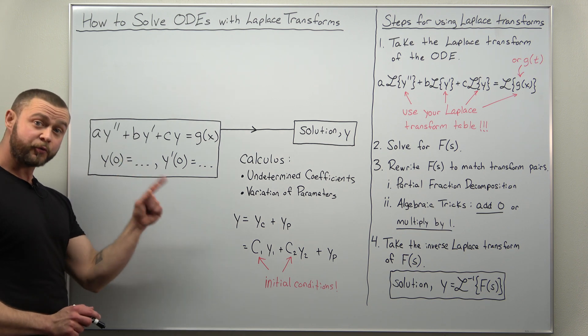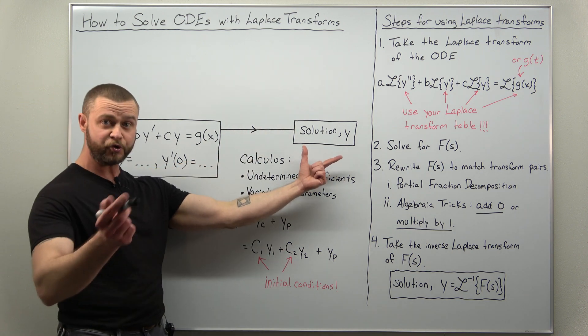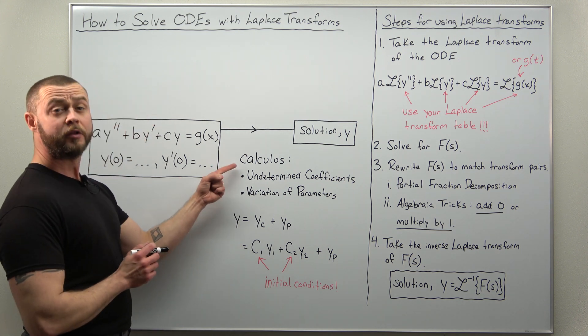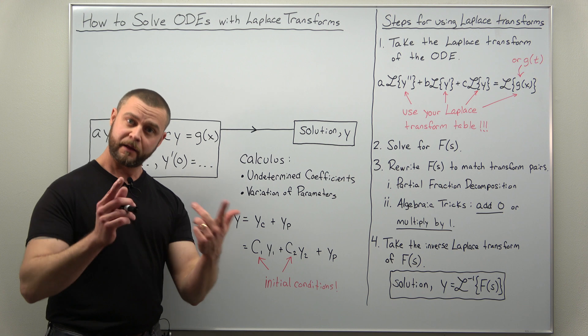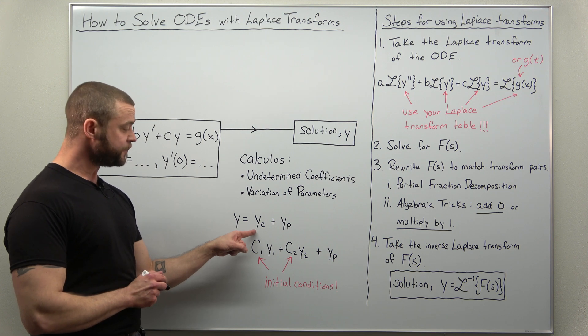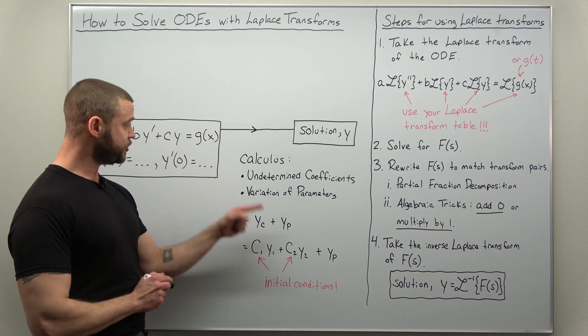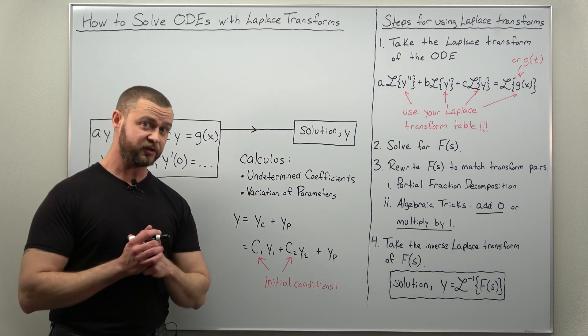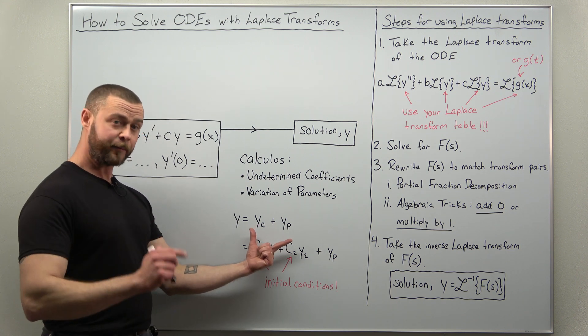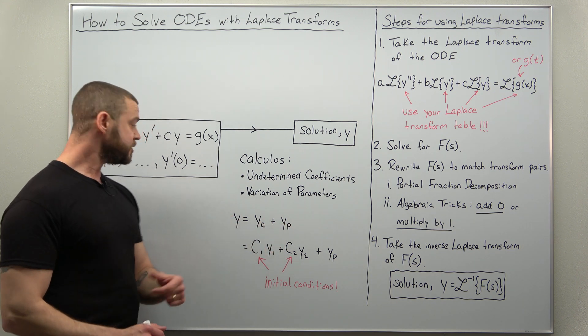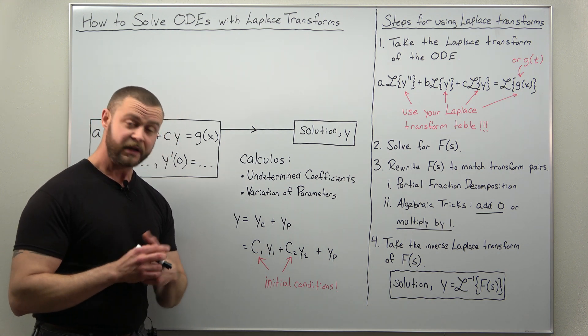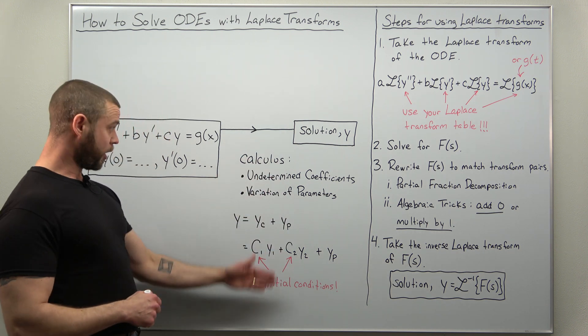Now there's a direct solution method going from the problem to your solution y as a function of x or y as a function of t, and the direct method here makes use of the tools from calculus. Typically here we break this into a few steps. First step might be finding your complementary solution. Second step finding the particular solution. That's where the methods of undetermined coefficients and variation of parameters comes in. And once you have your full solution, the complementary plus particular solution, then you can use your initial conditions to solve for the values of c1 and c2, and that might be already a lot of work just for one problem.